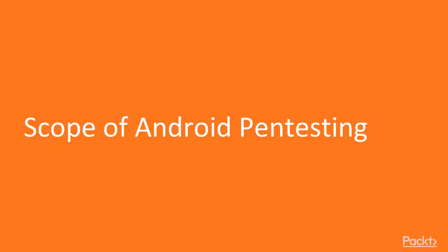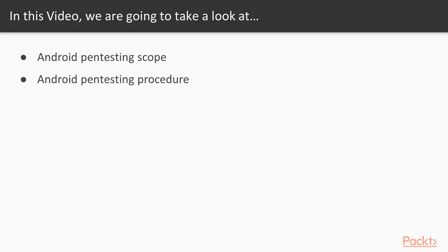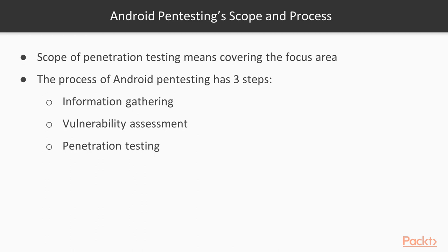In this video we are going to take a look at Android pen testing scope — what is the scope of Android pen testing and what is the procedure to perform penetration testing on Android. Scope of penetration testing means covering the focus areas. The process of Android pen testing has three steps: information gathering, vulnerability assessment, and penetration testing.